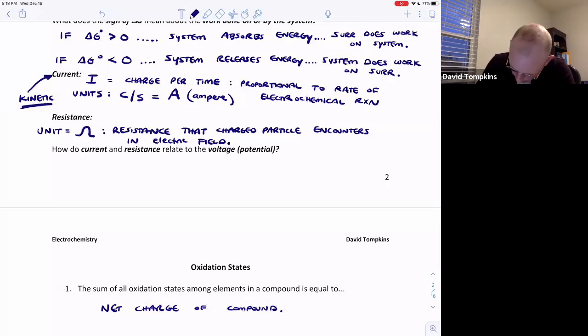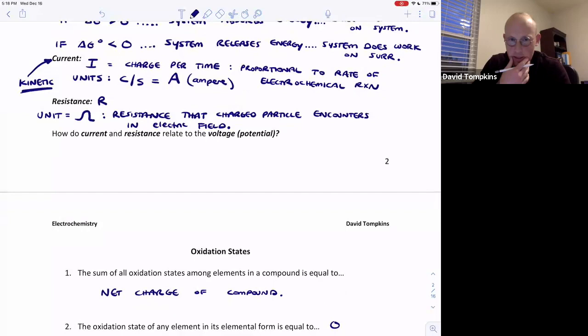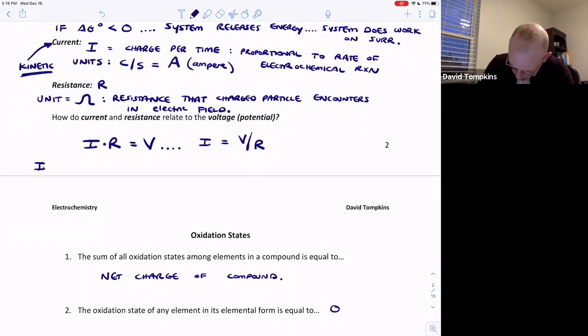Resistance, which has units of ohms, is often written as R, capital R. For a fixed potential, we'll find that the current multiplies by the resistance to give the voltage V. Or in other words, the current is equal to the voltage divided by the resistance. So the current and the resistance are inversely related. In other words, if you increase the resistance to the movement of a charged particle in an electric field with a constant voltage, then the amount of charge per time or the current will decrease, and vice versa.